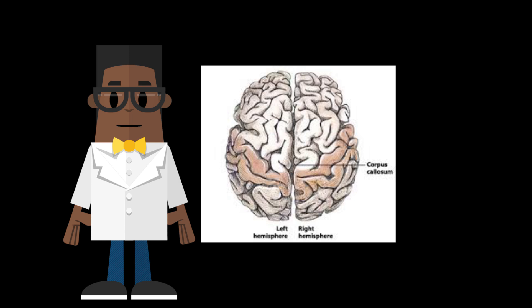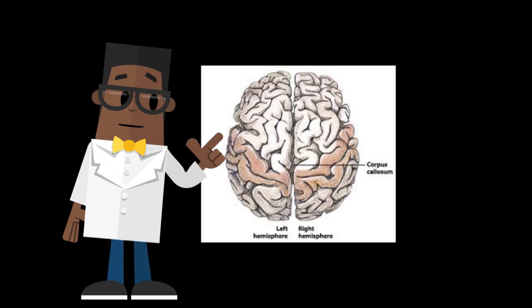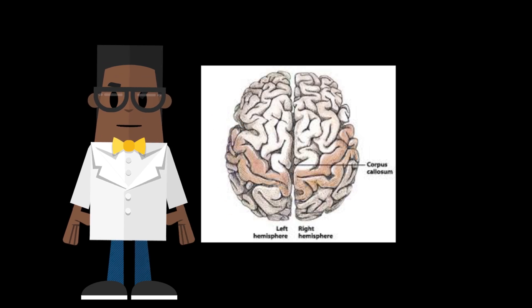The two hemispheres are connected by a dense region of neuronal axons that form white matter tracts to transmit information from one hemisphere to the other. This structure is called the corpus callosum, located in the midbrain.